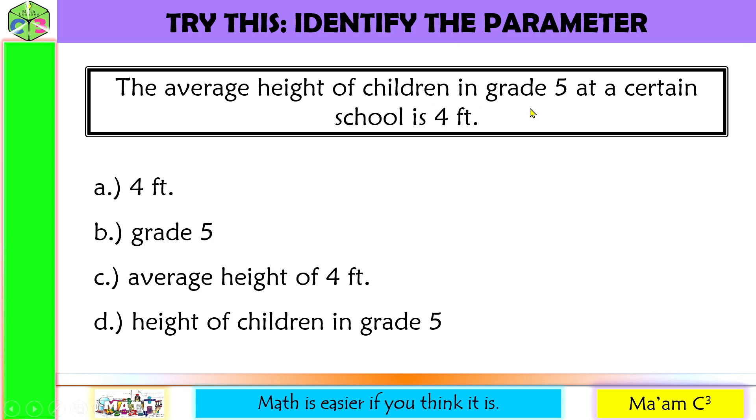Now, what data describes the population. It is the average height, which is four feet. So the average height is the data that describes our population. That would be our parameter.